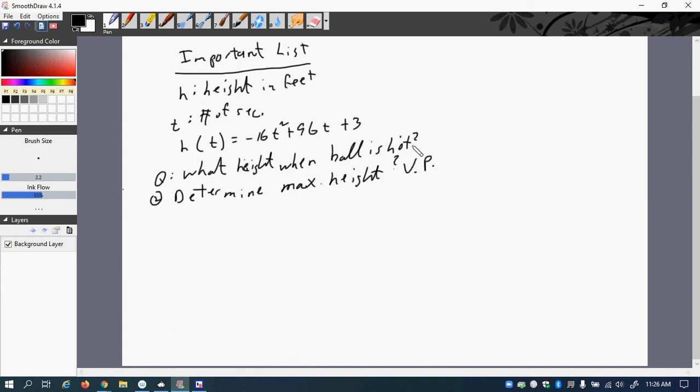What's the height when the ball is hit? So just as it's hit, t is 0 seconds. So that means I put that in for the equation. So h of 0 is negative 16 times 0 squared plus 96 times 0 plus 3.